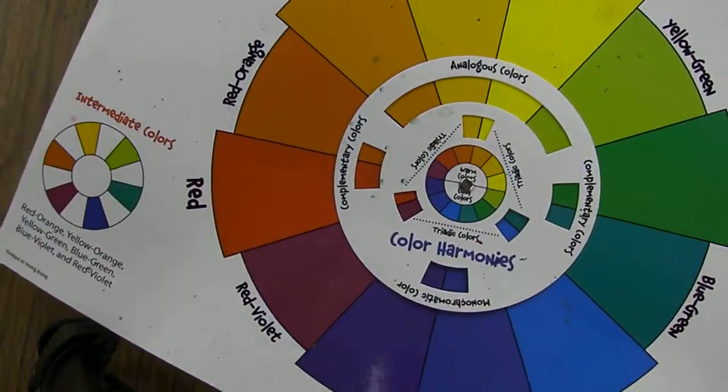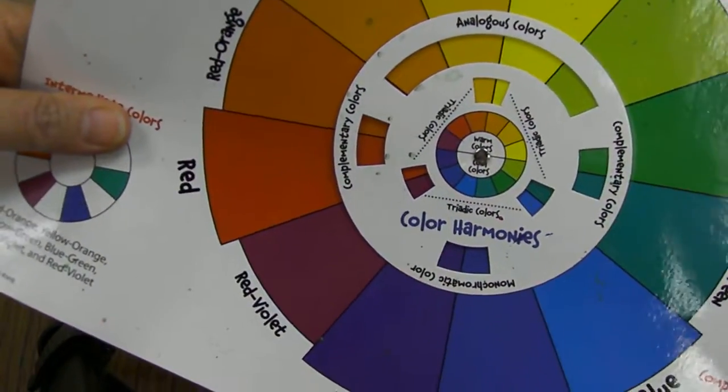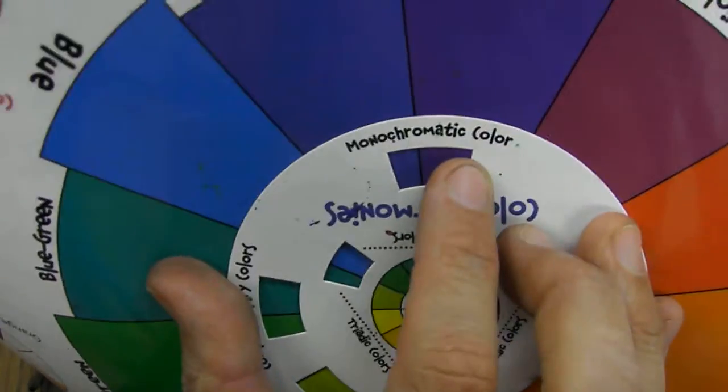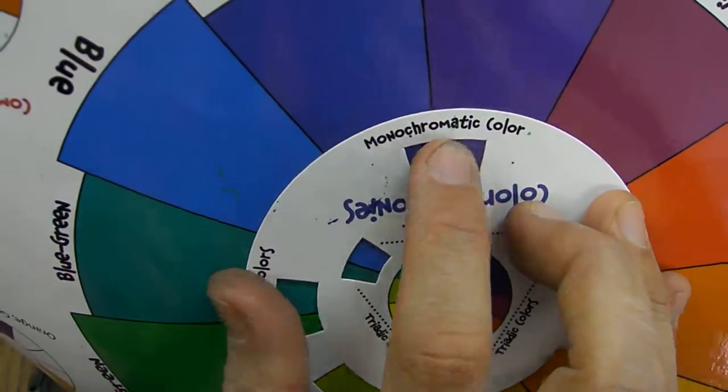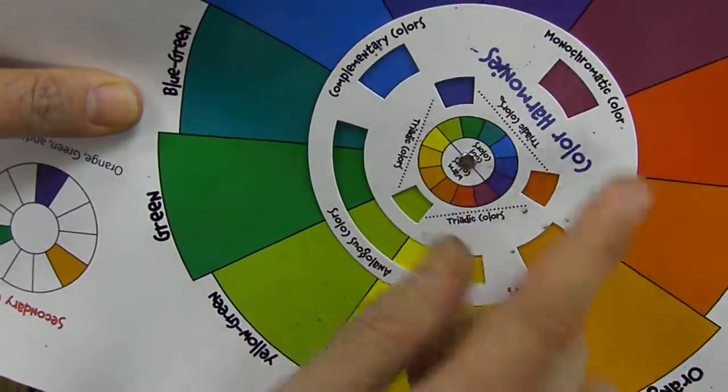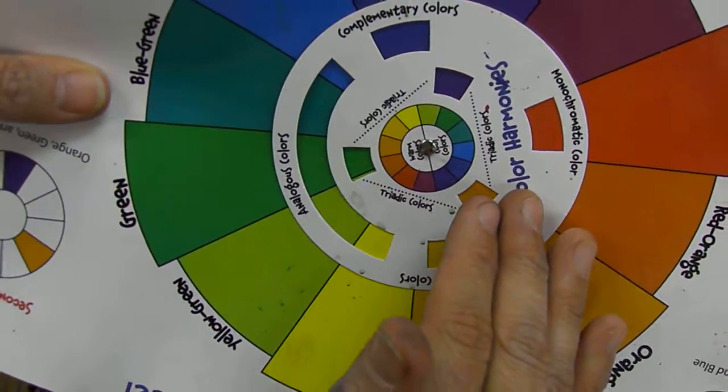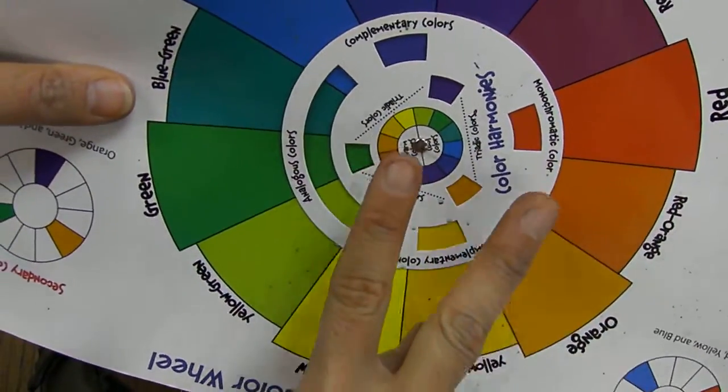The next thing we're going to talk about is a monochromatic color scheme. At the bottom, on the opposite end of that dial, it says monochromatic. Mono meaning one, chromatic meaning color. So one color. In that square, whatever color it lands on, whatever color you like, you could choose that for your background sky. So we're doing two different color schemes: one's analogous, and one's monochromatic.